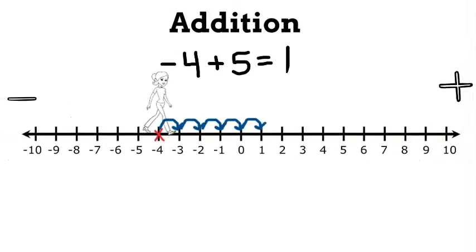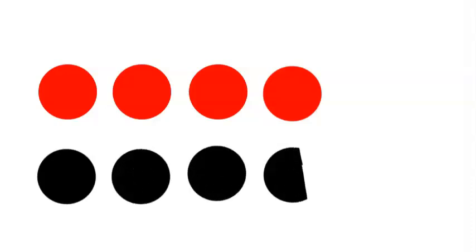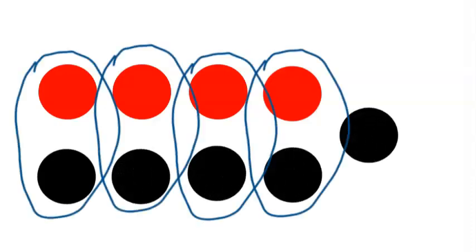Another way I can model it is with black and red chips, where black is positive and red is negative. I want to start with negative 4, so 4 red chips. Then, since it's plus 5, I want to add 5 black ones. Each zero pair would cancel out, and I'm left with 1 black chip, which represents 1.